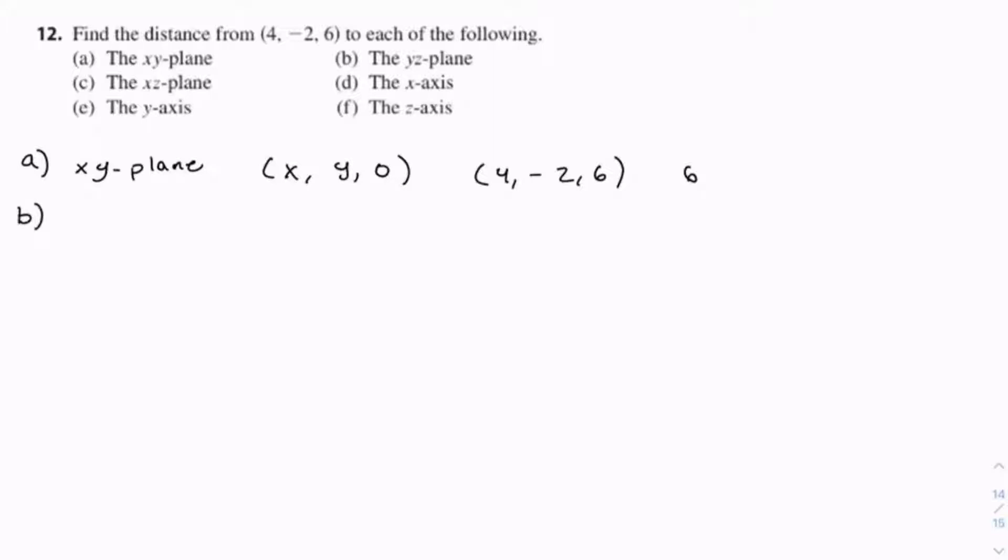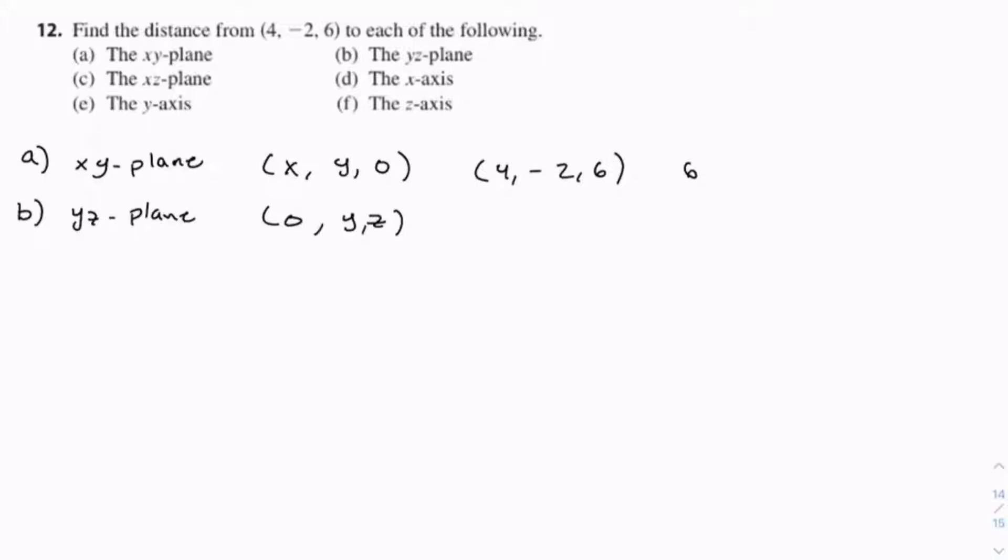For B, we have the yz-plane. This happens when x equals 0, and y and z, as before, can be any points. As long as x equals 0, it's on the yz-plane. Compared to our original point, these two components don't matter at all, so we just look at the x-component, which is 4, and 4 is 4 units away from 0. So that's the distance, 4 units.